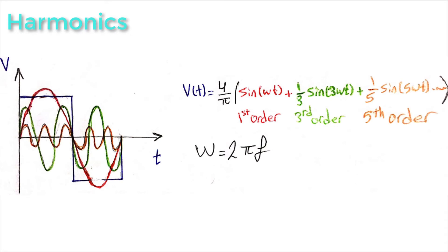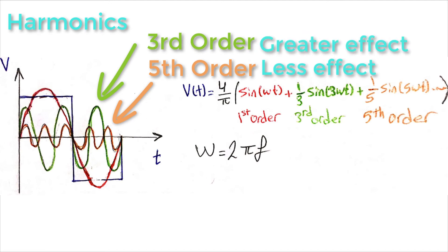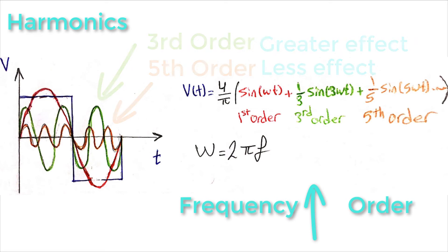A square wave signal is actually composed of many sine waves, and they are called harmonics. Each harmonic has its own amplitude and frequency, and the harmonic amplitude decreases as the harmonic order increases. So higher-order harmonics have less effect in forming the square wave signal. There is also one more thing to notice, and that is the harmonic frequency increases as the harmonic order increases.